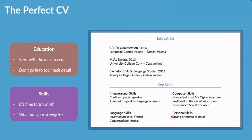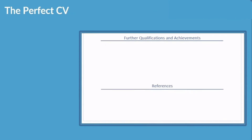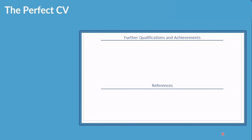The final skill category is personal skills - anything else you want to add, like 'strong attention to detail' or 'work well under pressure.' These are qualities employers like to see, so include them.